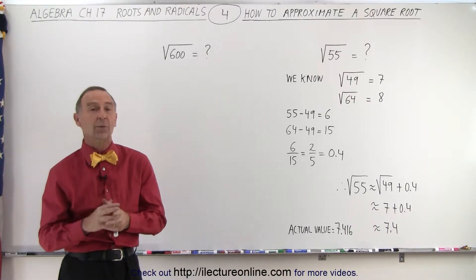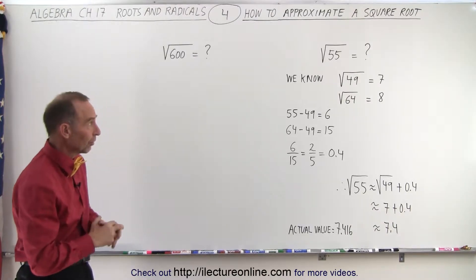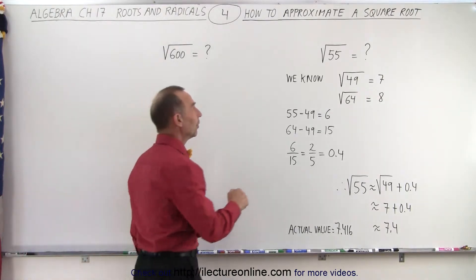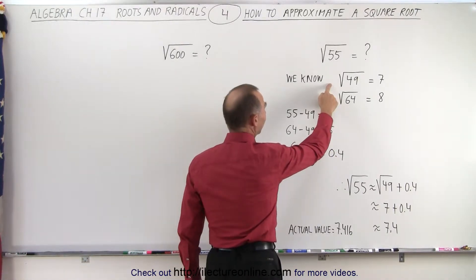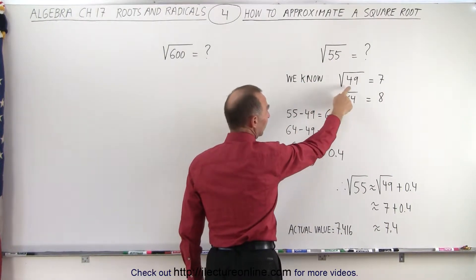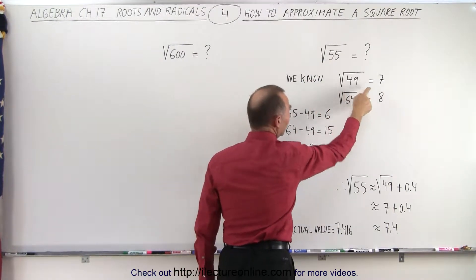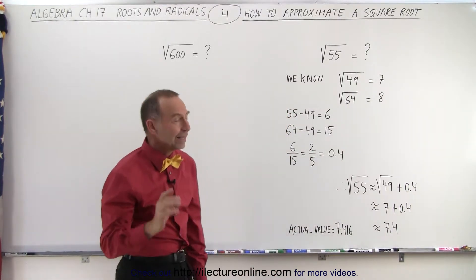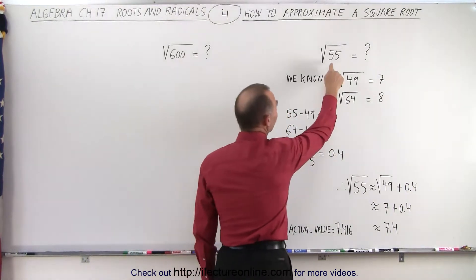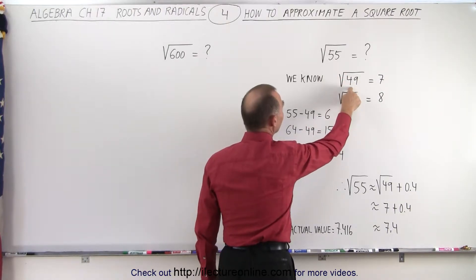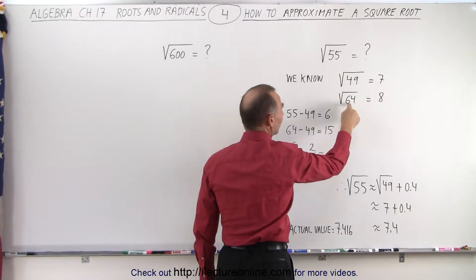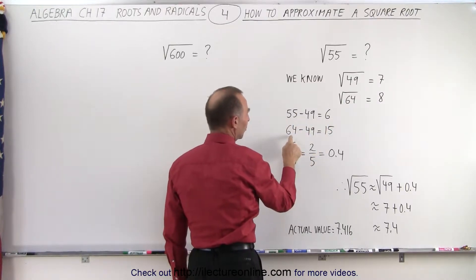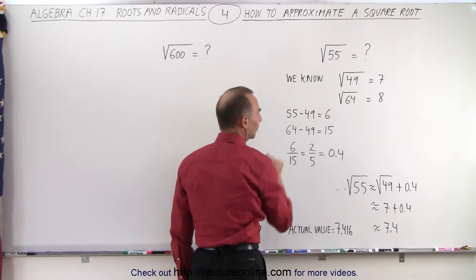We can approximate what that value is — the result of the square root of 55. The way we do that is we go to the numbers whose square roots we know exactly, before and after 55. We know that the square root of 49 is 7 and that the square root of 64 is 8. Then we see how far 55 differs from 49 and how far 55 differs from 64. The difference between 55 and 49 is 6, and the difference between 64 and 49 is 15.